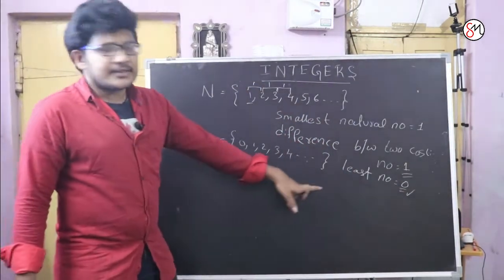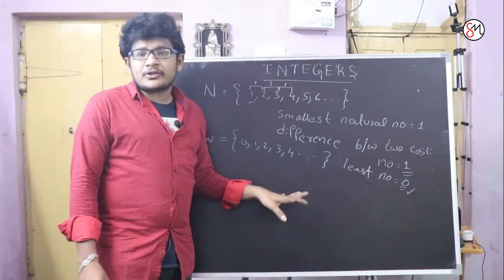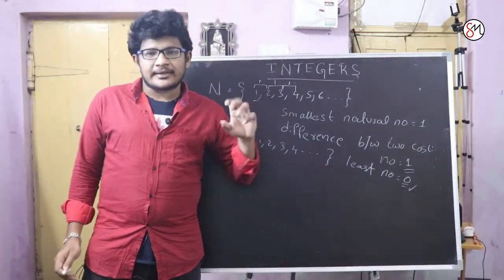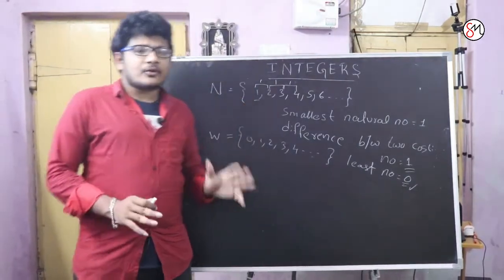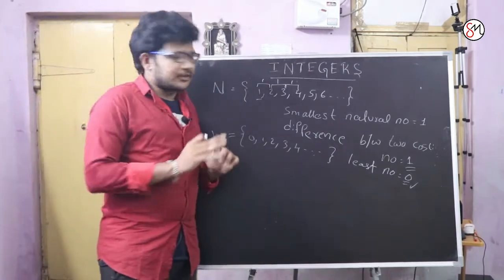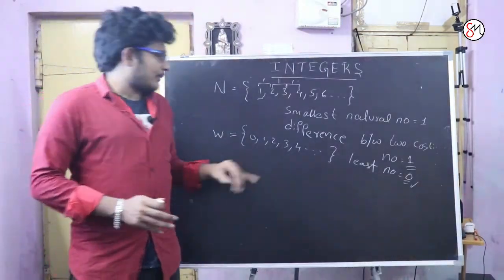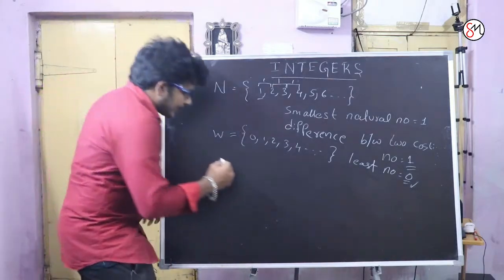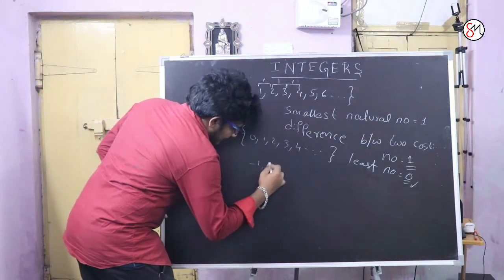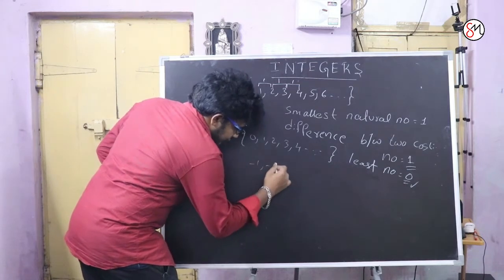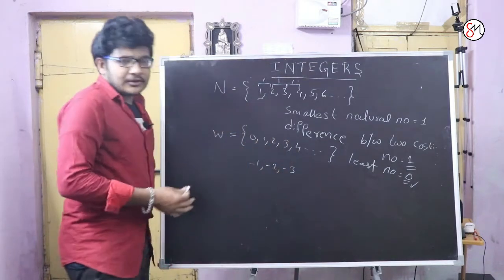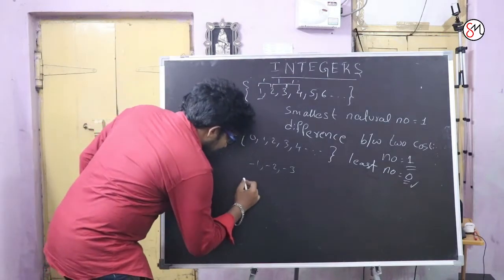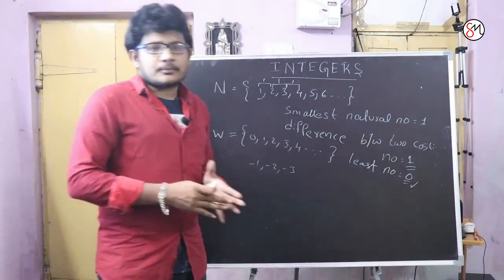The least number is 0. There is no highest number — the number of numbers is infinite, so there is no highest number. Now, if we include 0, 1, 2, 3 along with negative terms like minus 1, minus 2, minus 3, these negative numbers, and include them all together, we call them integers.